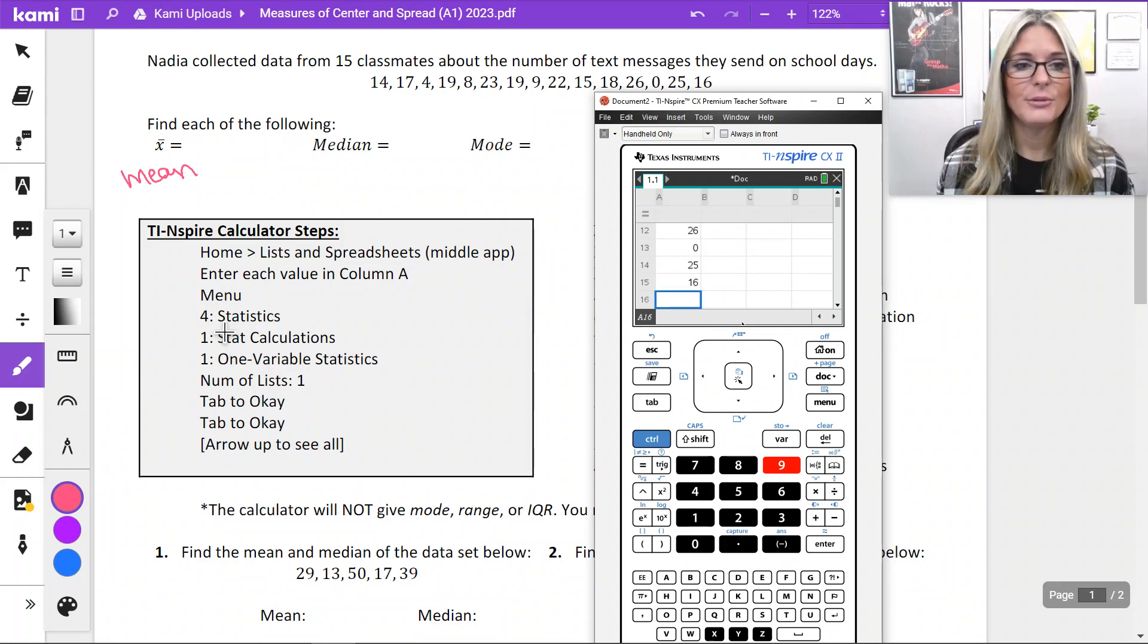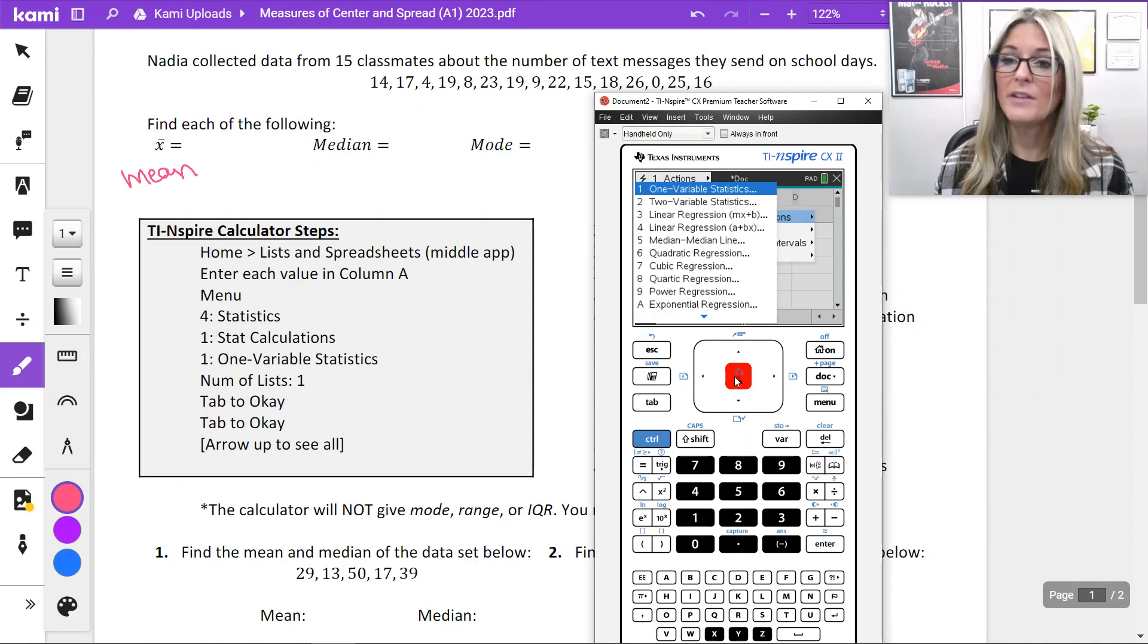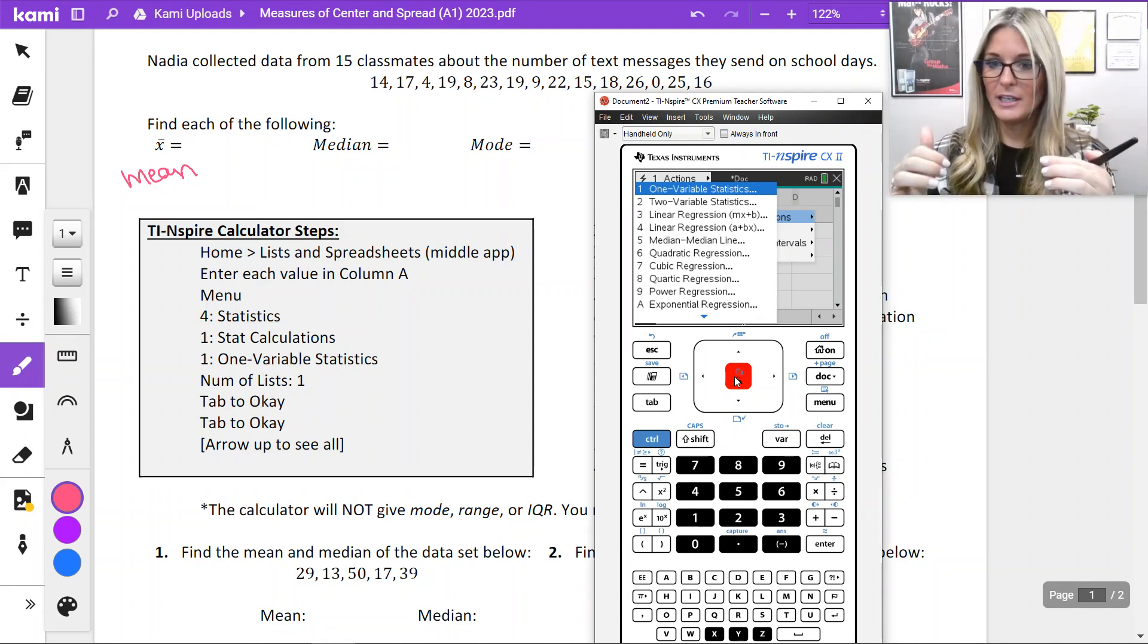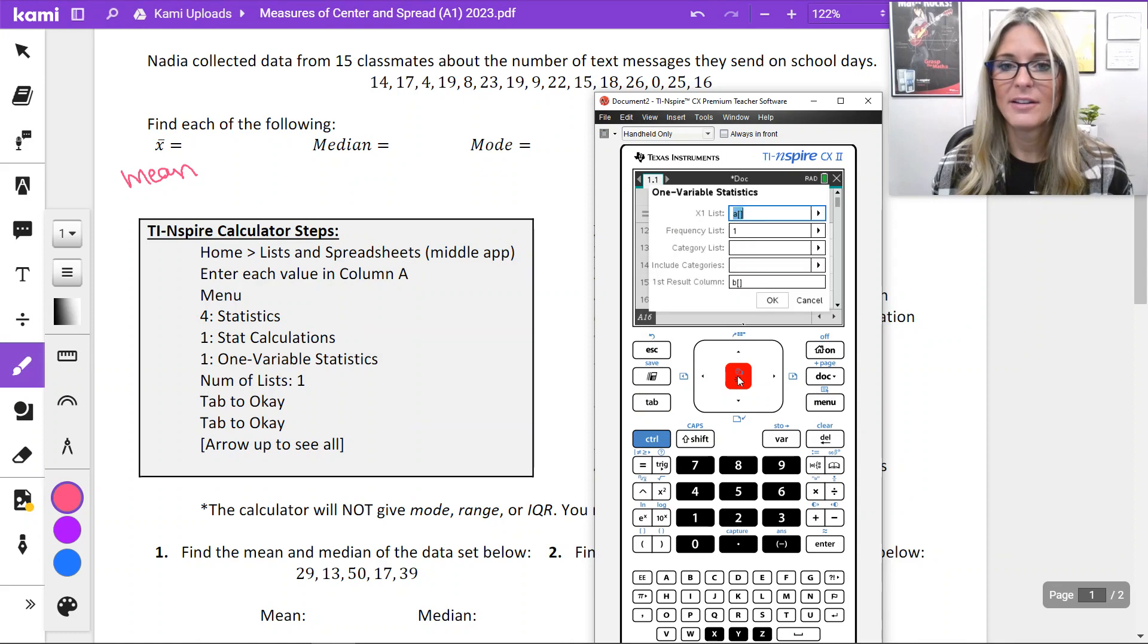So the next thing we're going to do is menu, statistics, number four, stat calculations, number one, one variable statistics. So this means there's only one column. When we look at scatter plots when there's X and Y, we'll do two variable. But right now we're just working with one column, one list, one variable statistics. We're not going to change this number of lists. There is only one list here. So use the tab key to take you to OK. All the defaults are going to work just fine.